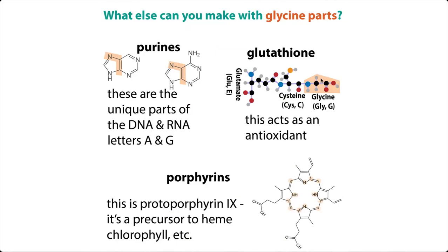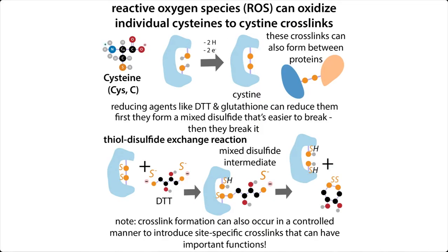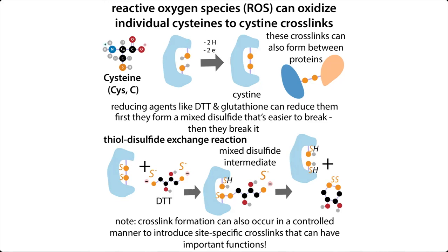Also coming from glycine is part of glutathione. If you think about taking a glycine, a cysteine, and a glutamate and sticking them together, you get this molecule glutathione. Glutathione is an important antioxidant — it can be used to either prevent oxidative damage before it happens or correct it once it does happen. One type of oxidative damage is that cysteine can form crosslinks, covalent linkages between different amino acids in a protein. Sometimes this is something you want; sometimes it's something you don't. If they happen in a controlled manner, great. If uncontrolled, not so great. Antioxidants can act as reducing agents — they can reduce these crosslinks and allow those proteins to function normally again.